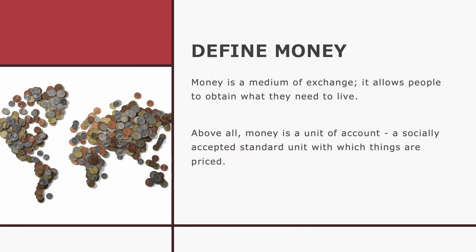In your workbook at the top, there are two boxes. One asks you to define money and the other asks you to define something called fiat money, which we'll look at in a minute. Money is a medium of exchange — it allows people to obtain what they need to live. Above all, money is a unit of account; it's a socially accepted standard unit with which things are priced. So write down that money is a medium of exchange and a socially accepted standard unit.